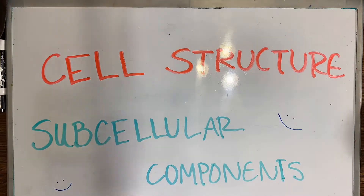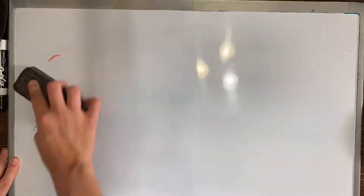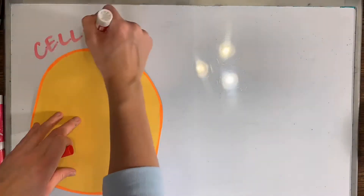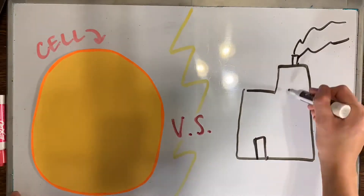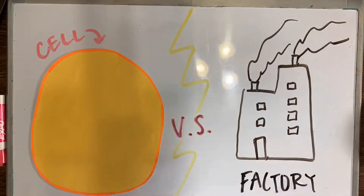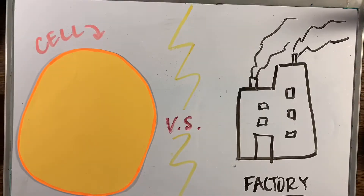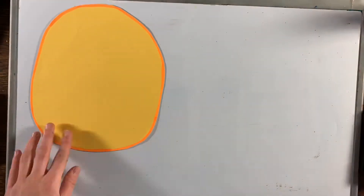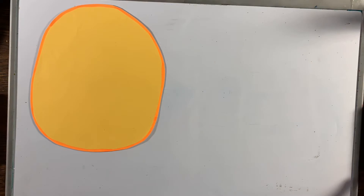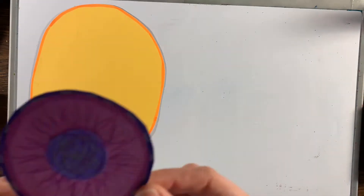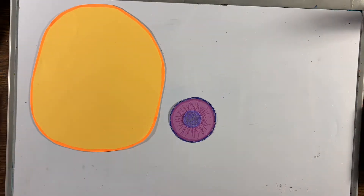In order to make this easier to understand, we will be comparing a cell to a factory, and each organelle will be some part of that factory. The first organelle is the nucleus, and inside you can find the nucleolus.